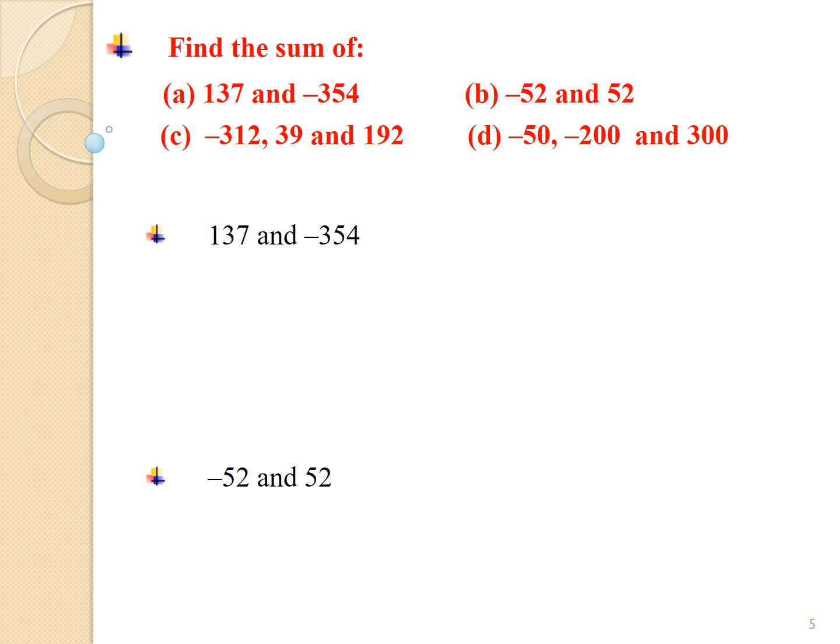Rule number 1: if we want to add 2 integers and the integers have the same sign — that is, if both integers are positive or both are negative — then we have to add the integers as whole numbers by ignoring the sign, and the answer we get has the same sign. That is, if 2 integers are positive, we get the answer in positive.